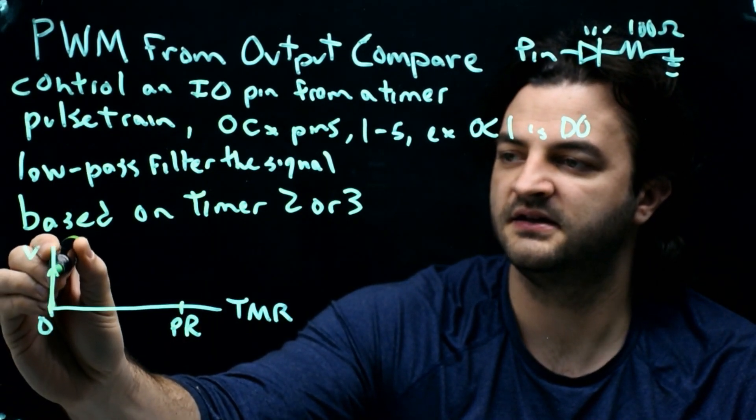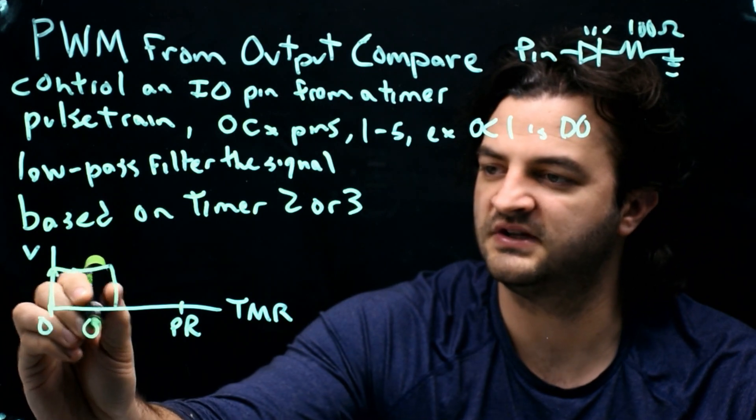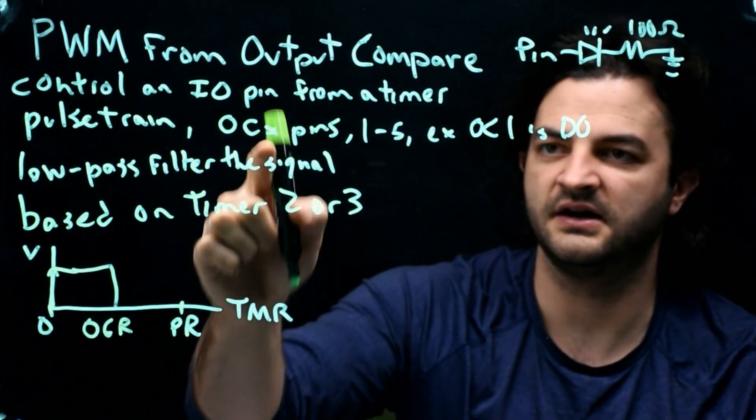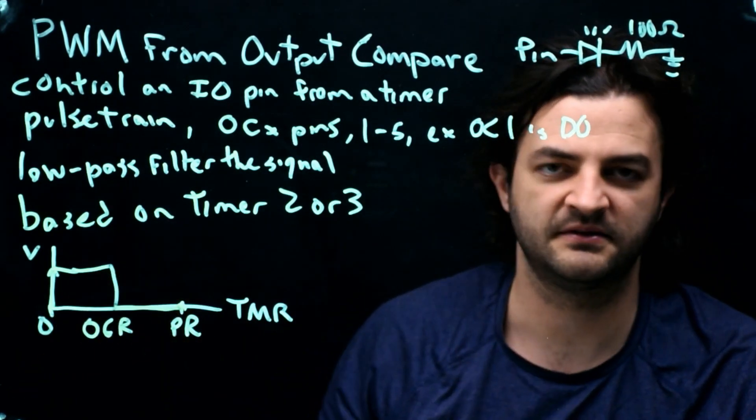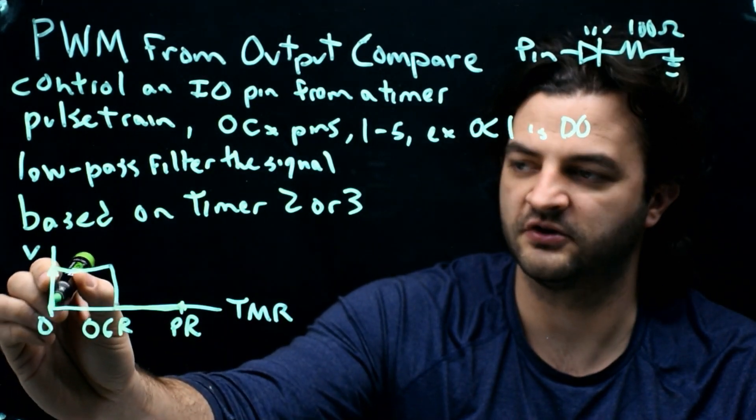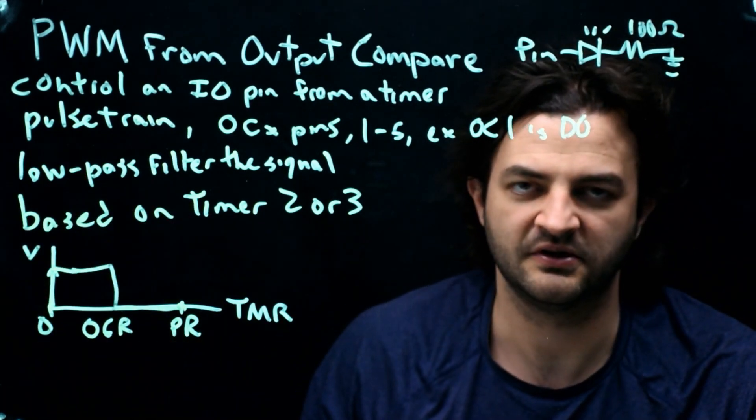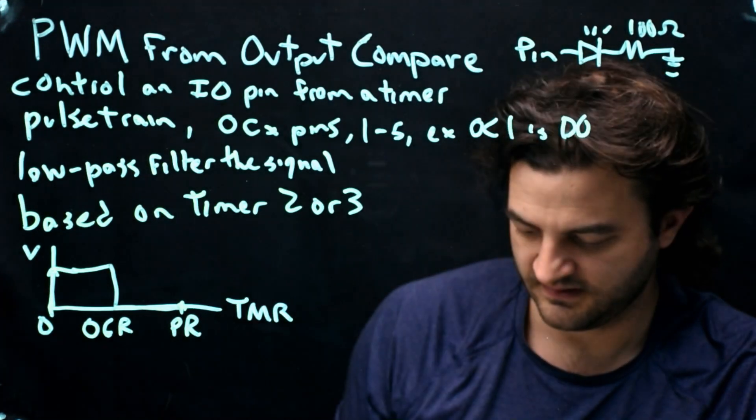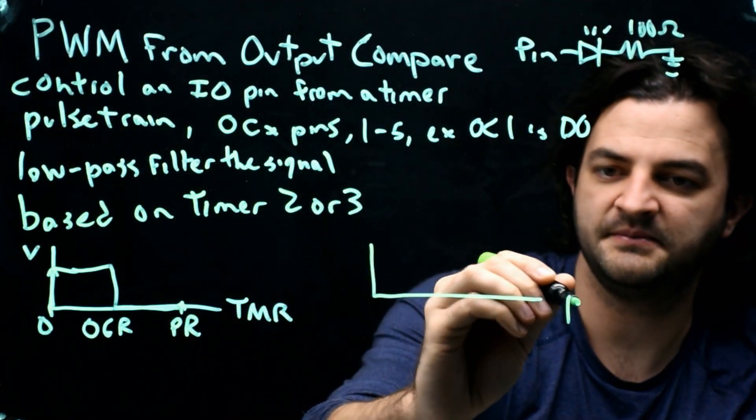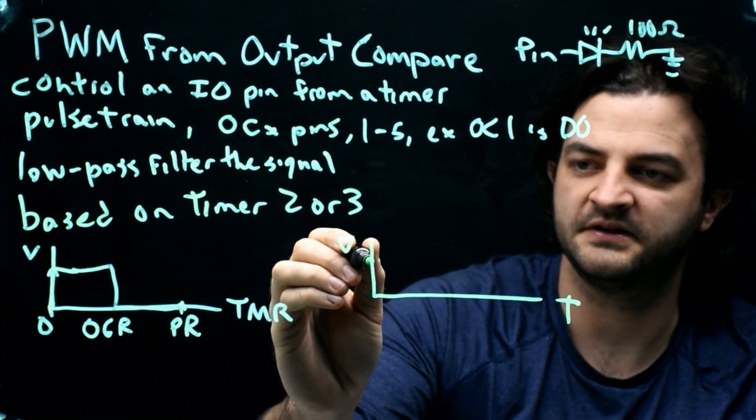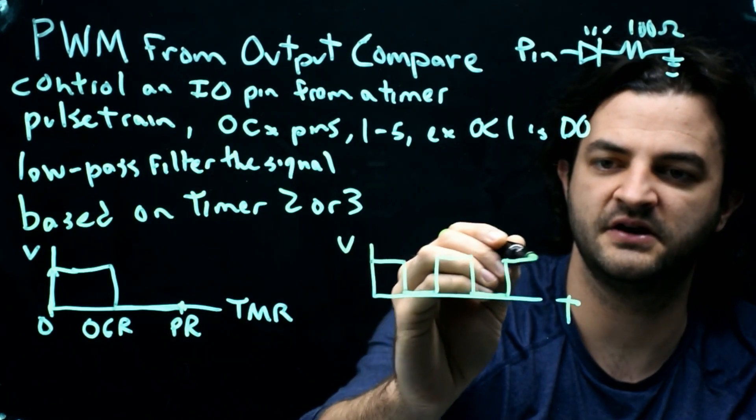Then we can initialize the output compare pin. And the output compare pin says when the timer value is 0, the pin will go high. And it will stay high until it hits a value that we set with the output compare registers called OCR. So if we were doing OC1, that would be OC1R. And then the pin stays low until the timer hits the value PR. When it hits PR, the timer value goes back to 0. The pin goes high and stays high until the timer value is equal to the OC1R register. So if we wanted to look at voltage versus time instead of just the timer value, we would see the pin go high and stay high for a certain amount of time and go low, and then go high, and then go low, and go high, and go low. And it would do that forever.